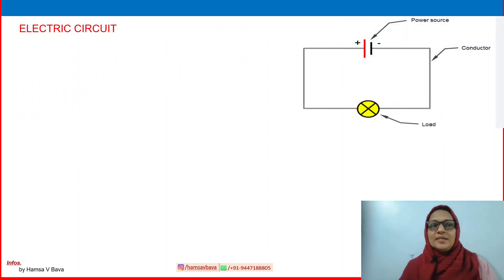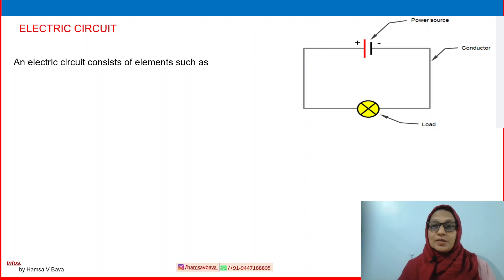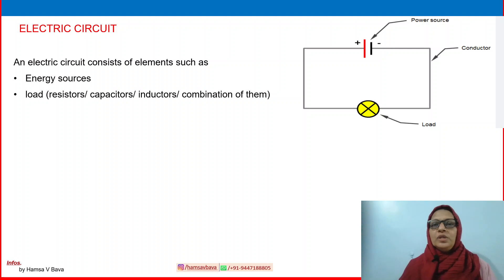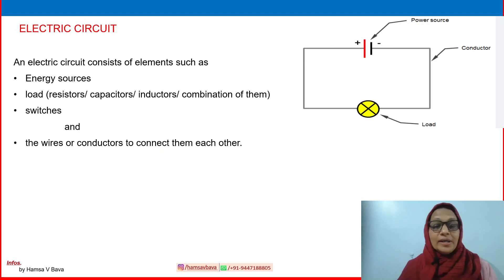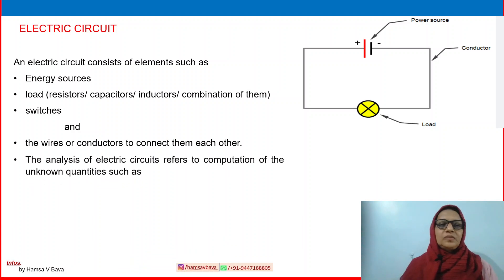What is an electrical circuit? An electric circuit consists of elements such as energy sources, load — which may be a resistor, capacitor, inductor, or any combination of these — along with switches, and finally wires or conductors to connect the components to each other.